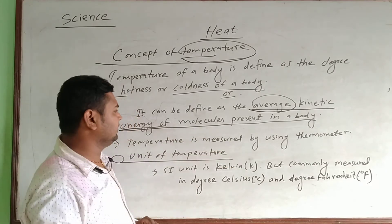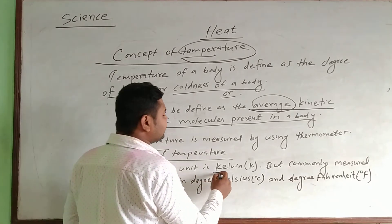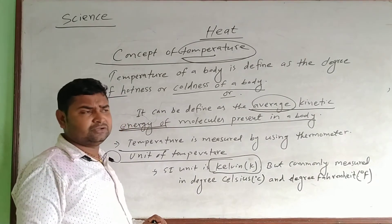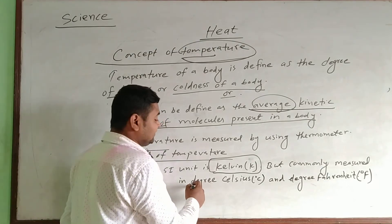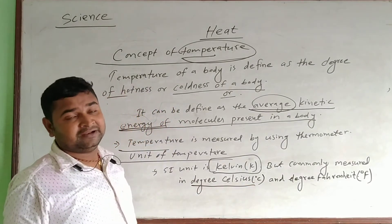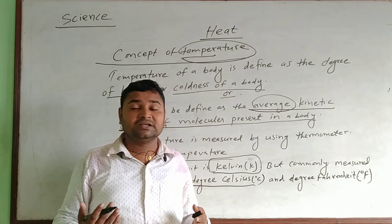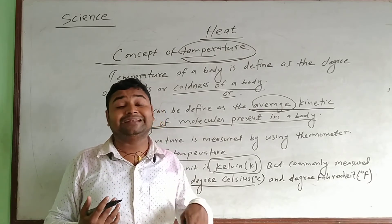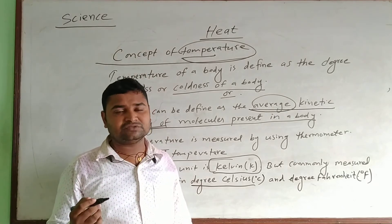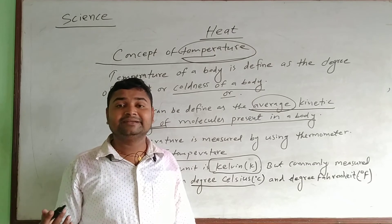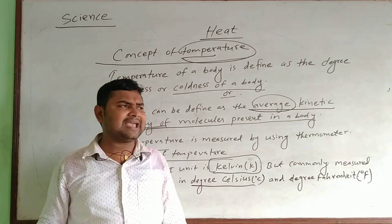Which instrument is used to measure the temperature? That is the thermometer. What is the unit of temperature? Its SI unit, accepted by all the world, is the Kelvin. Generally, temperature is measured in degree Celsius or degree Fahrenheit. For example, when you go to the doctor with a fever, the doctor says you have a temperature of 101 degrees Fahrenheit — not 101 degree Celsius, but 101 degree Fahrenheit. Doctors commonly give readings of 101, 102, or 98 degrees Fahrenheit. So in general, we measure temperature in degree Celsius and degree Fahrenheit.